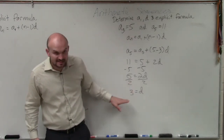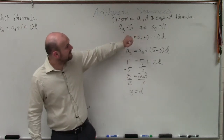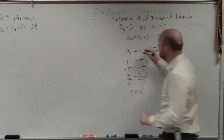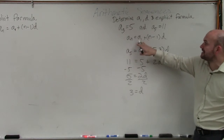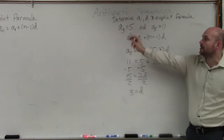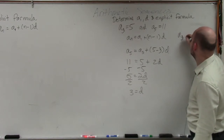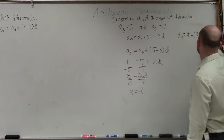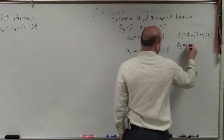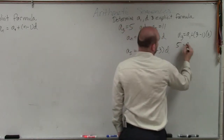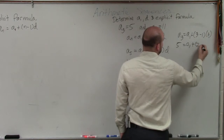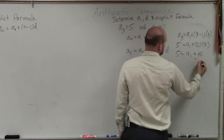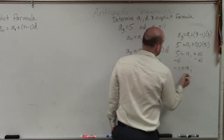In this case, the difference is equal to 3. Now, if I know that the difference is equal to 3, I can use that to find A sub 1. Going back to the formula — I know A sub 3, so I say A sub 3 equals A sub 1 plus 3 minus 1 times my difference, which is 3. A sub 3 is 5, so 5 equals A sub 1 plus 2 times 3. That gives us 5 equals A sub 1 plus 6, so negative 1 equals A sub 1.